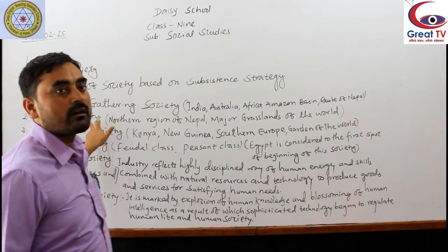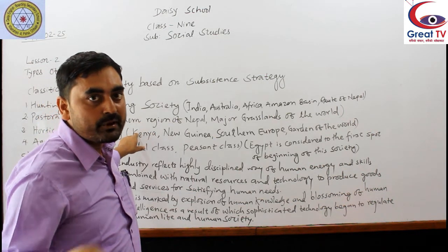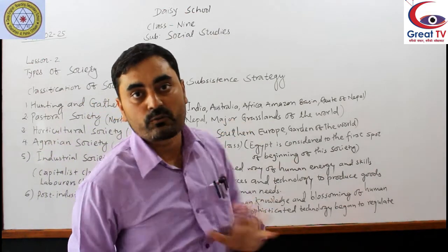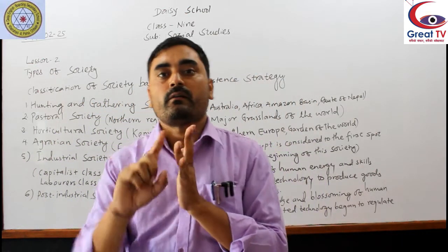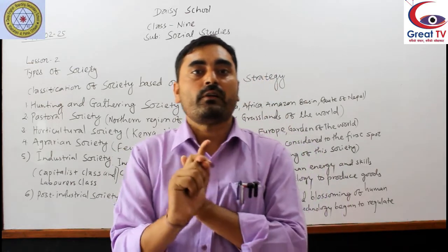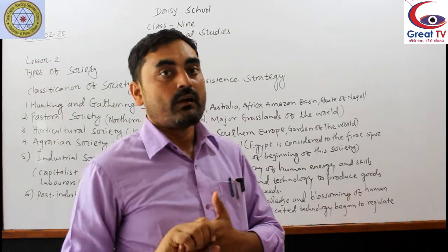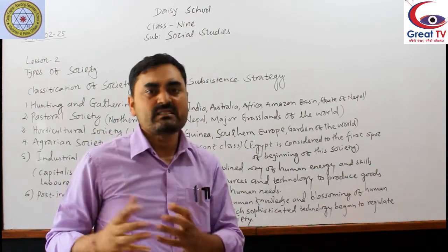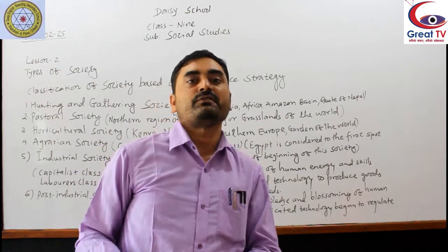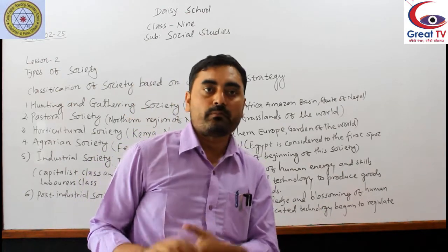Similarly, pastoral society — the northern part of Nepal is the dominant of this type of society. Similarly, major grasslands of the world: Llanos of Venezuela, Pampas of Argentina, Campos of Brazil, and the Veld of South Africa — these places still have pastoral society based on animal rearing. These societies are the dominant of pastoral society.